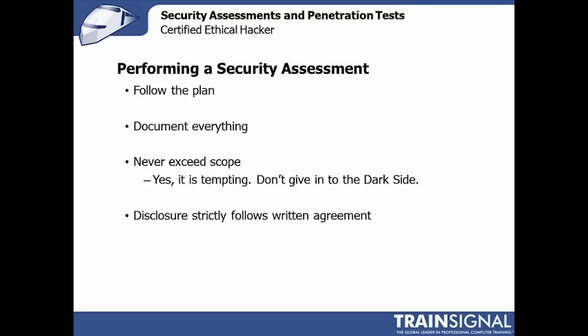Ensure that no disclosure happens outside of the written agreement. If I've agreed to only disclose findings to person X, then person X is the only person I'm going to talk to. If I find a critical vulnerability during my assessment and feel they need to know immediately — that it can't wait for a formal report — I should tell person X with a recommendation like: I noticed this router is configured this way, I found during my penetration test that this may be a problem and is a well-documented attack vector, and this is something you probably don't want to wait to fix. They may refer you to the staff, pass the information on, or say keep quiet and keep going. Adherence to the communication plan is absolutely crucial.